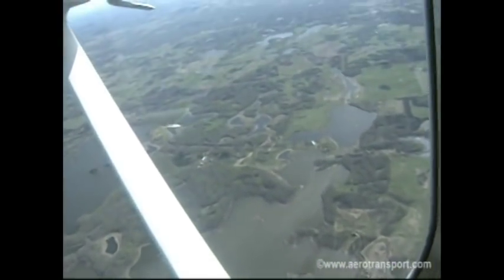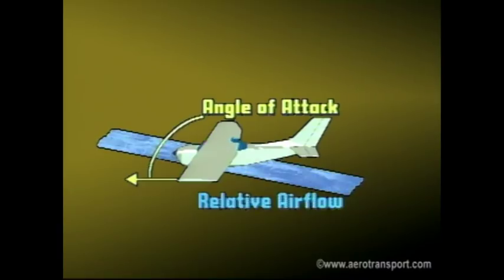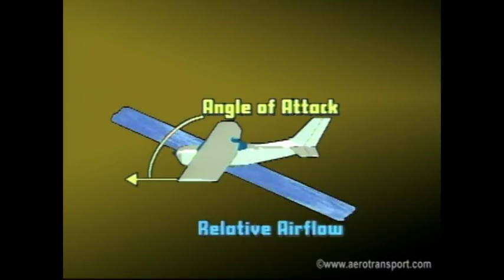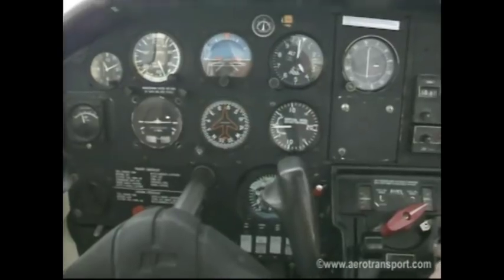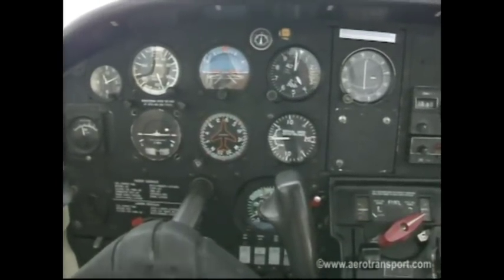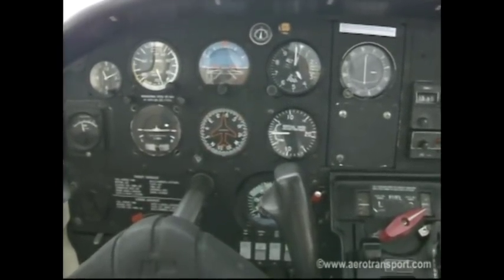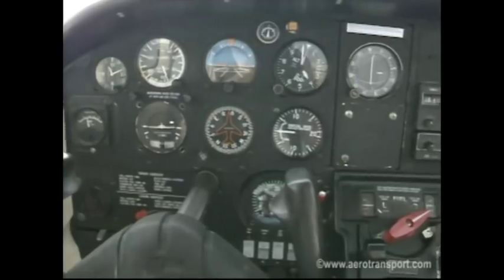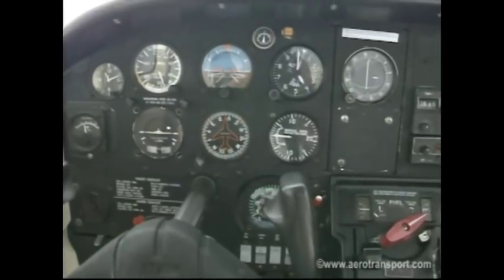There are several ways you can put an aircraft into a spin, whether deliberate or accidental. Keep in mind the angle of attack — not attitude — is the key factor. You can enter a spin while level, descending, or climbing. A spin may also occur after a high-speed stall.